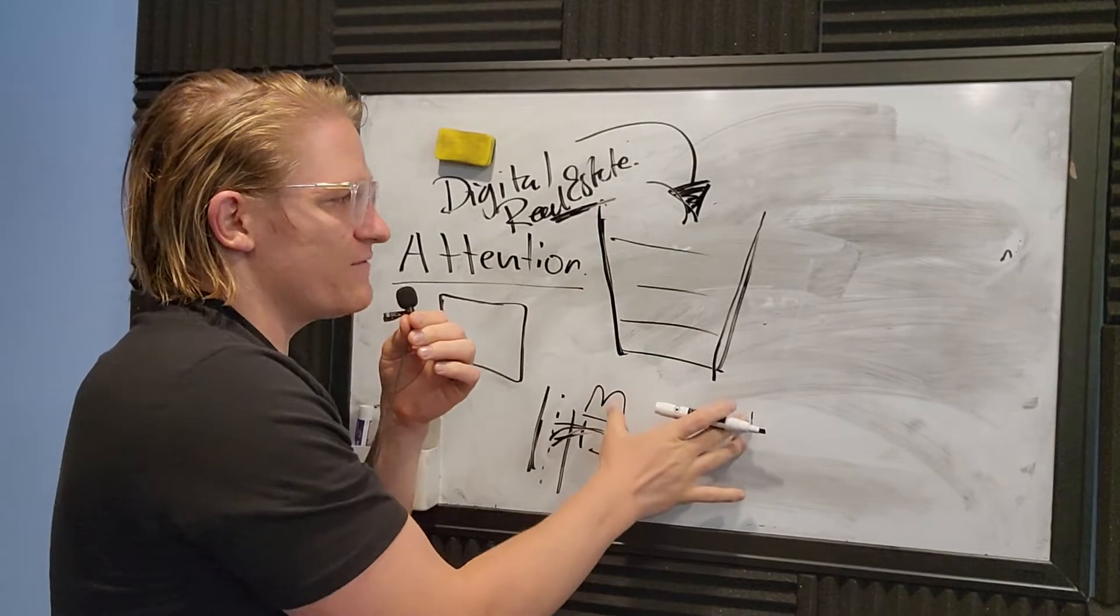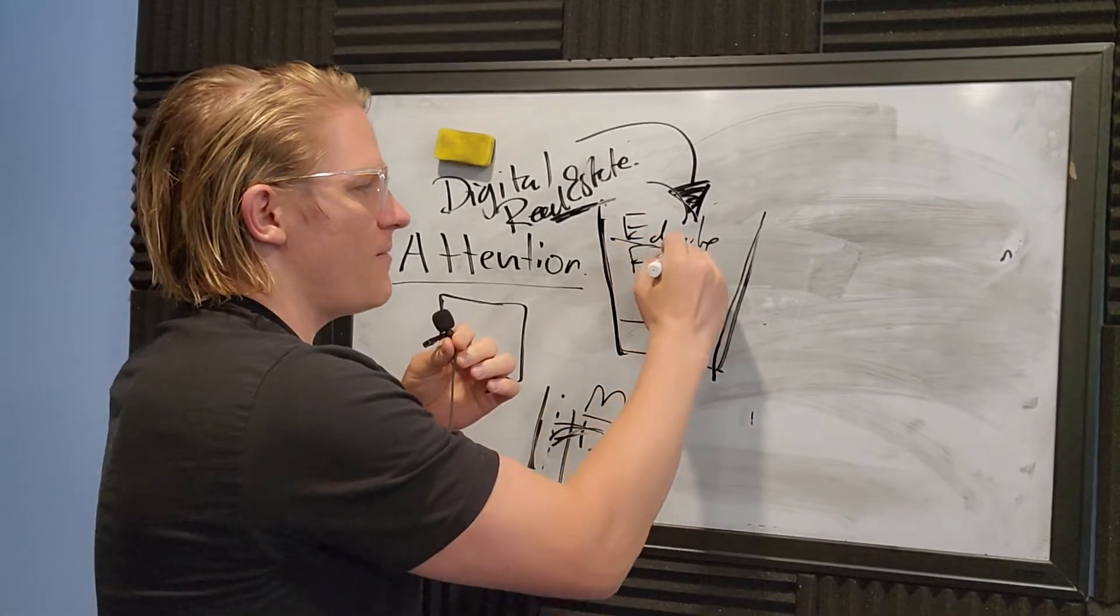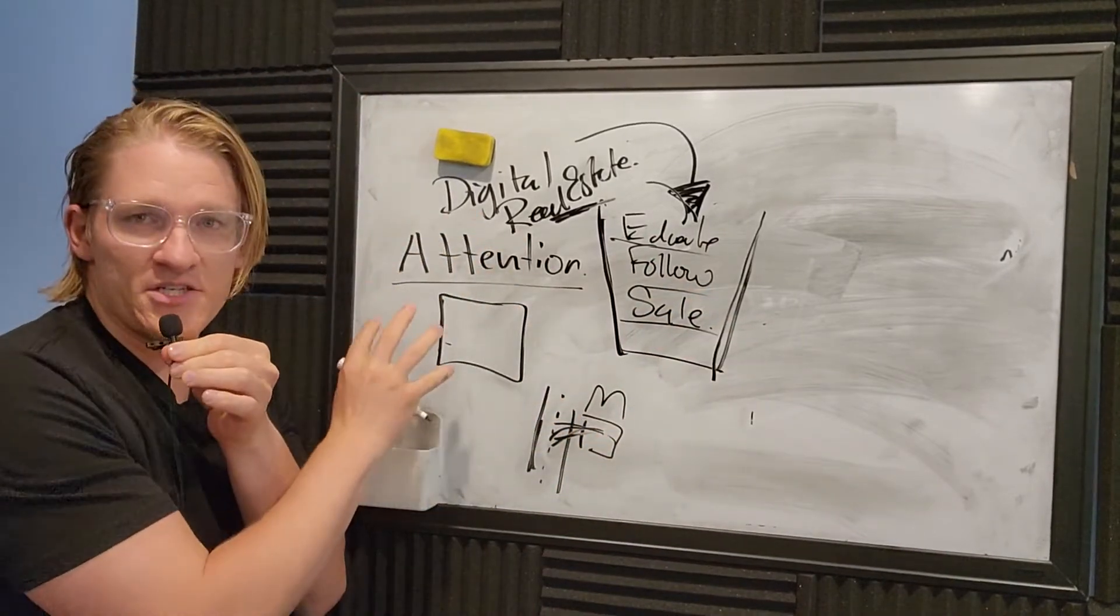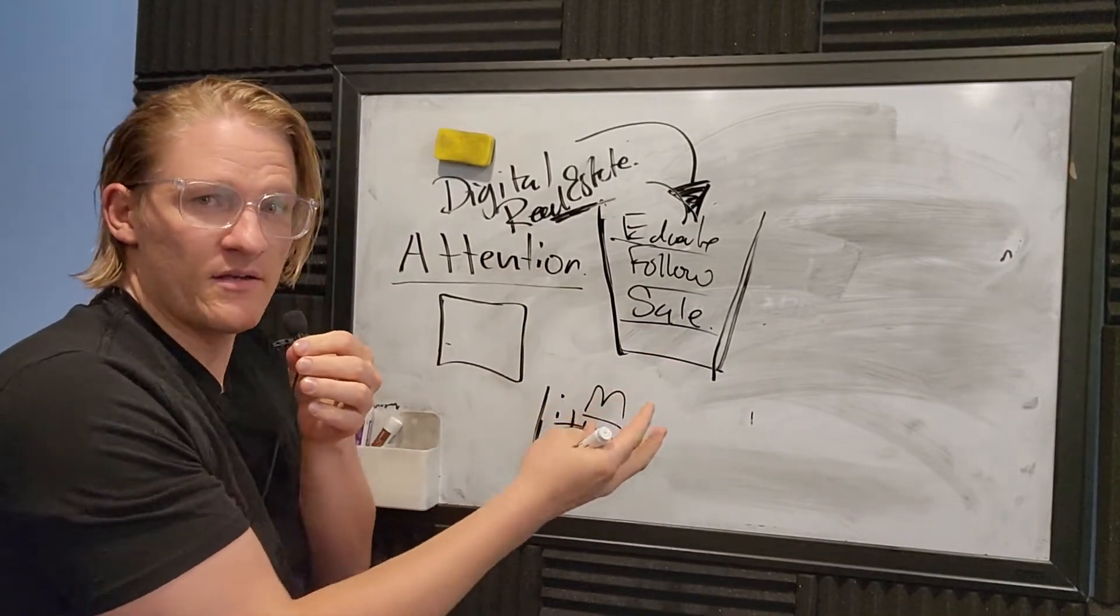So that's the first part, getting people's attention. Second part is getting people into the sales funnel, which means you're going to educate them, follow up, and sell. That's the key here - getting their attention on autopilot and then educating them, following up, and selling them on autopilot.